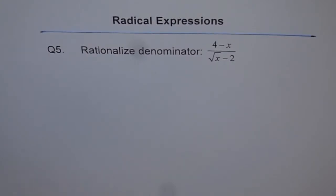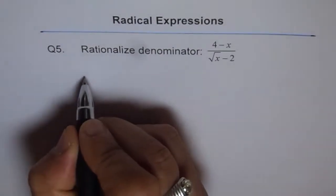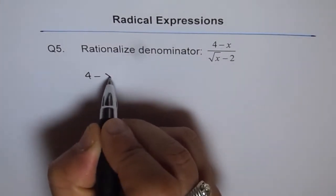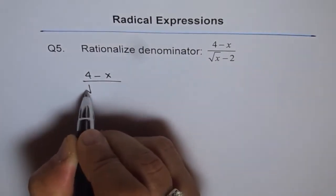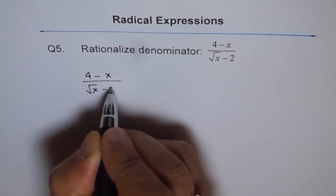Question 5. Rationalize denominator. So here the given expression to us is 4 minus x over square root of x minus 2.